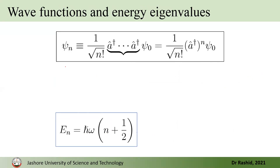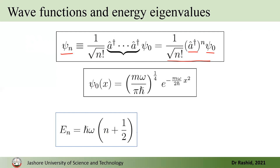We showed that the eigenstates can be written as follows. For any state N, ψN equals (1/√N!) times A-dagger applied N times to ψ0, where ψ0 is the ground state wave function, which is an exponential function. Since A-dagger is a real operator and ψ0 is real, all the eigenstates are real.